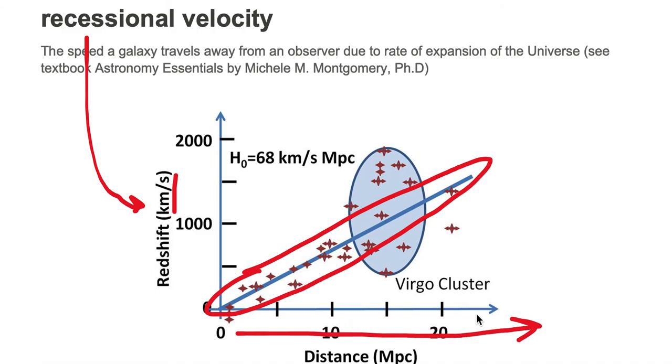The further a galaxy is from us, the faster that galaxy's moving away from us, which is known as the recessional velocity. The reason why the galaxy's moving away from us is due to the rate of the expansion of the universe.